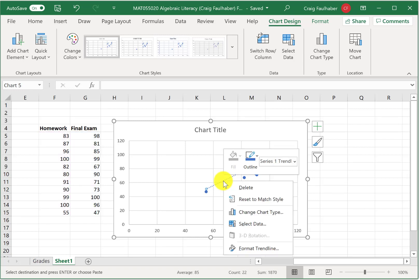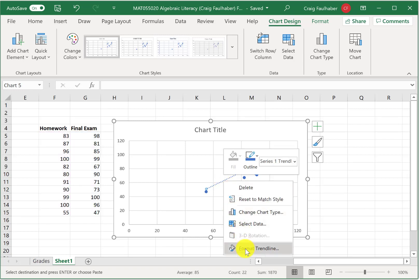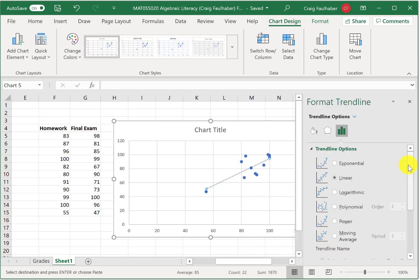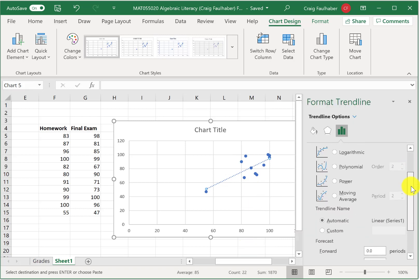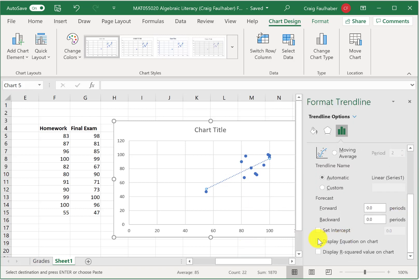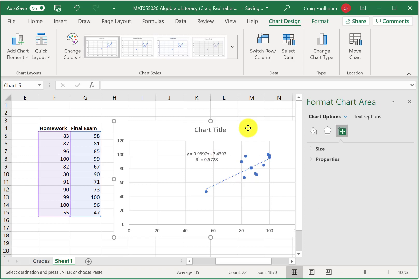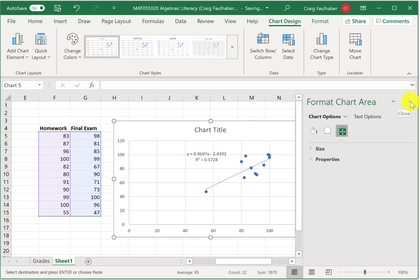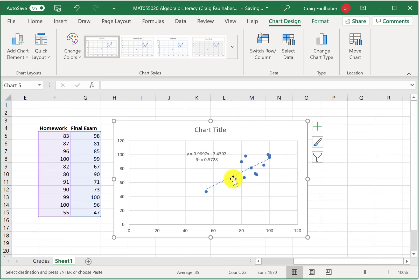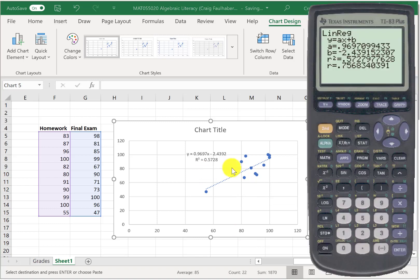We can right-click that best fit line and click Format Trend Line, and it should bring up some options for us. If I scroll down a little bit, we can display the equation for that trend line, or that line of best fit, and we can display, they give us an R squared value. I can then click that area and drag that equation over here, and you can see now that Excel gave us the exact same line of best fit and the same R squared value. That is literally just the value of R that we found squared, as we got with our calculator.